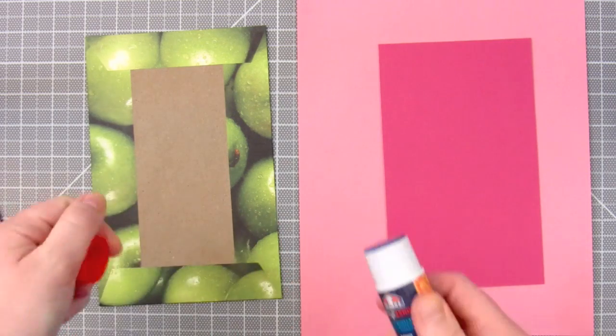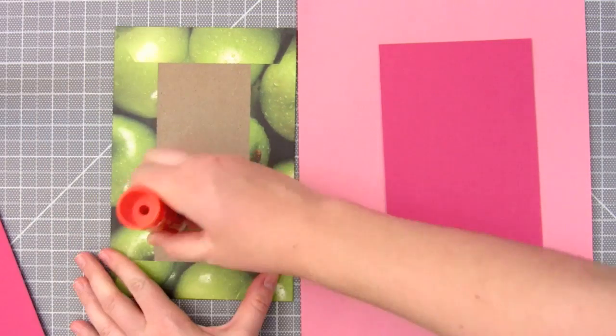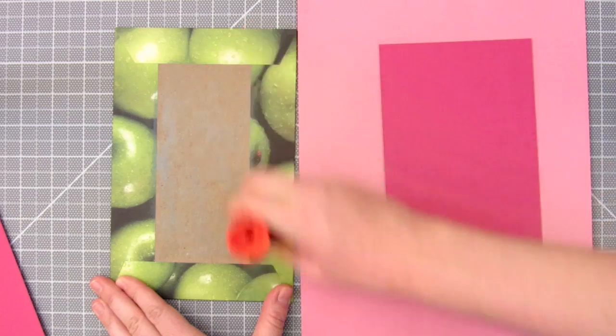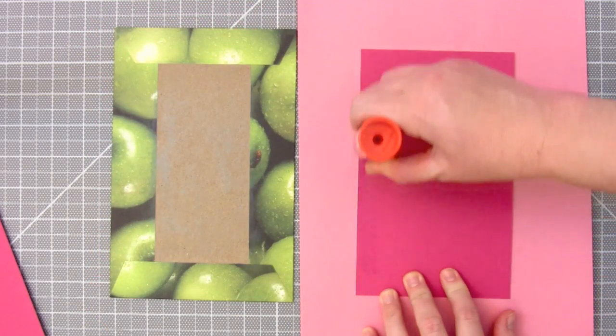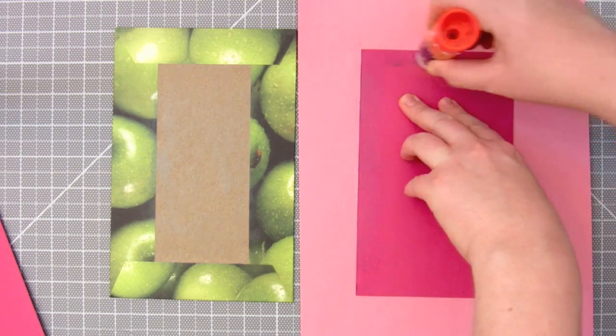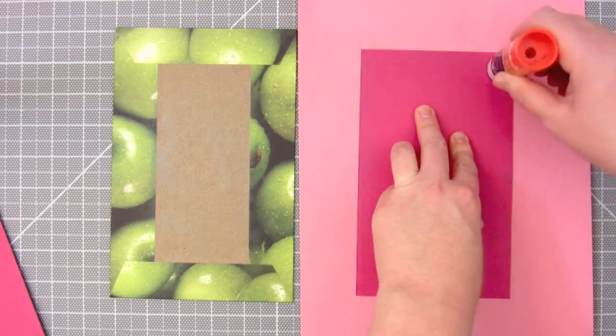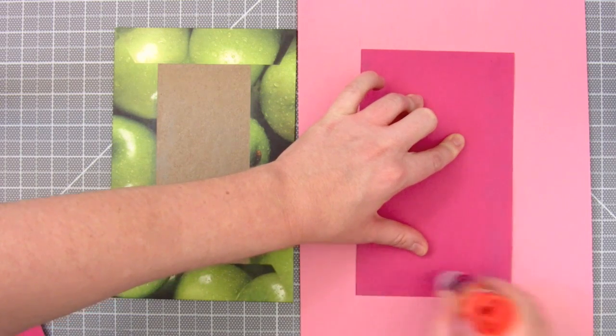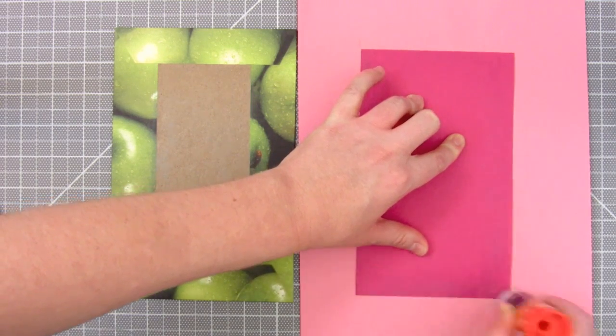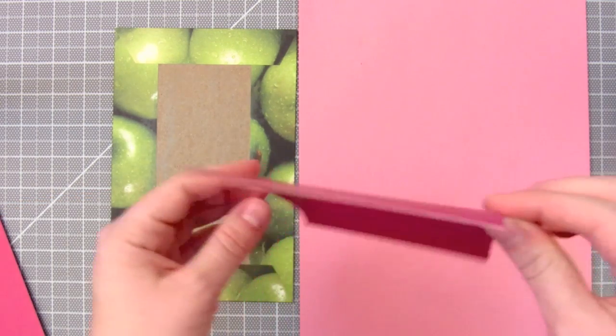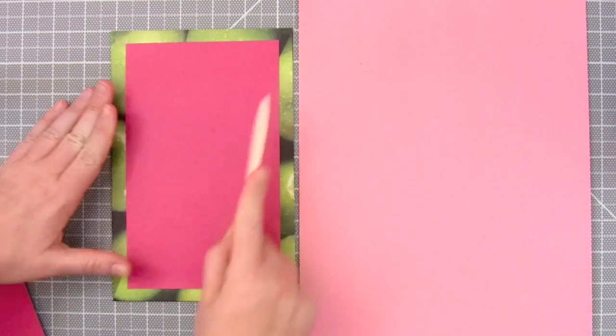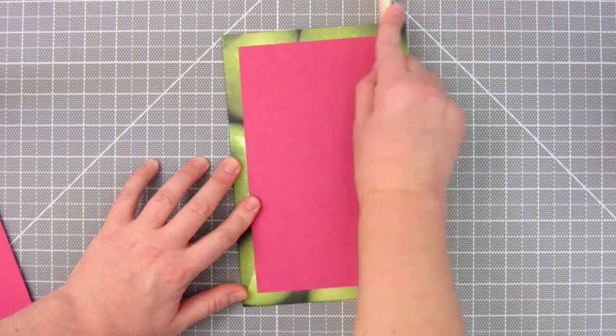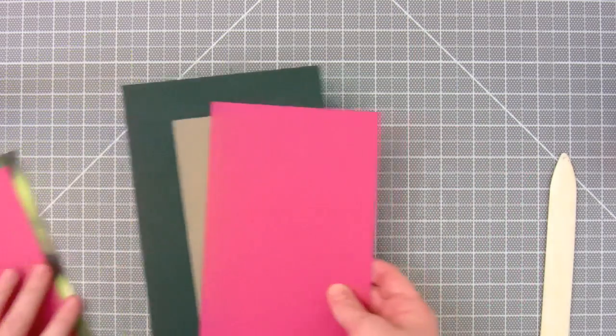Put a lot of coats on the inside of the cover, then apply coats on the outer edge of the paper. Then press the paper down centered on the cover, and run the bone folder to smooth out. Repeat this on the other cover.